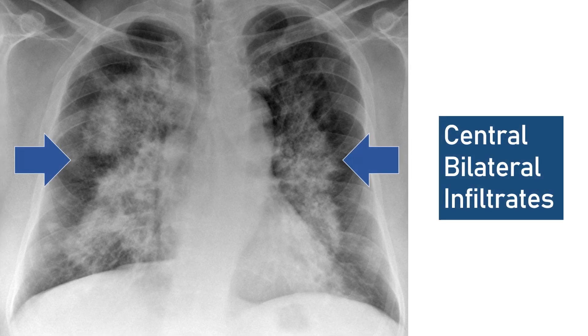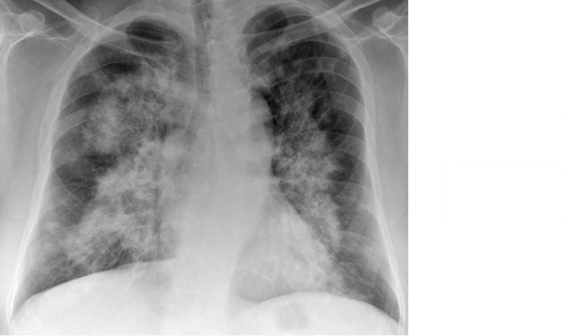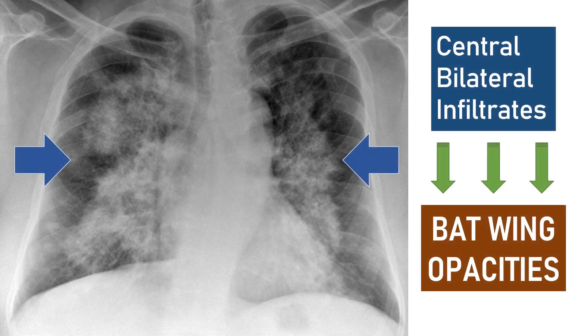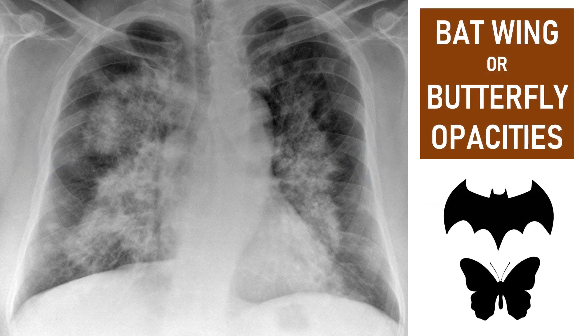So these are the central bilateral infiltrates. The sparing of the APCs and costrophrenic angles are demonstrated here. These infiltrates are called batwing opacities. Batwing or butterfly pulmonary opacities refer to a pattern of bilateral perihilar shadowing, classically described on a frontal chest radiograph but can also refer to appearances on chest CT.